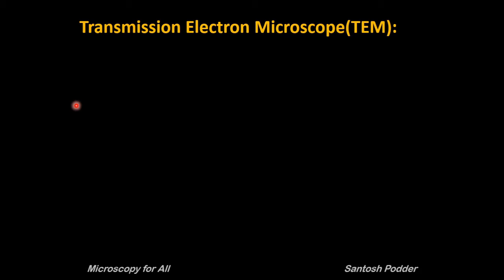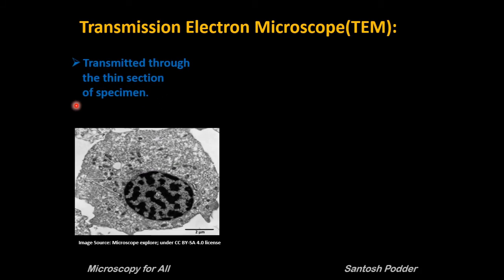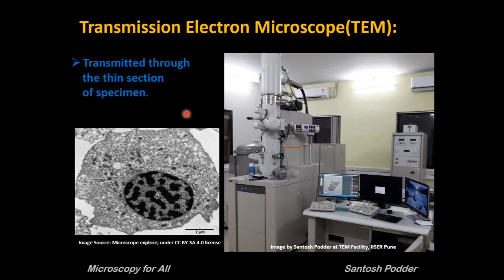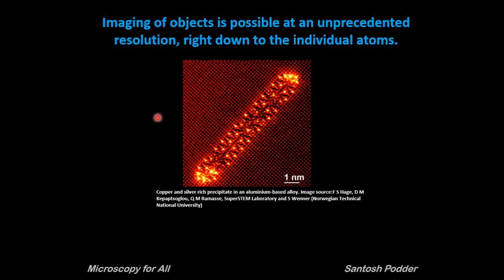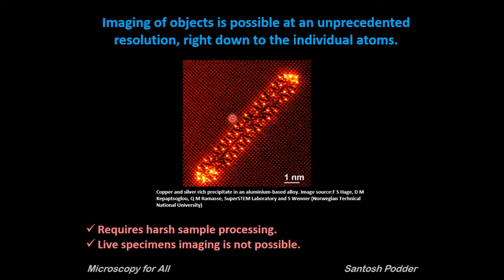In transmission electron microscopy, a beam of electrons is transmitted through a thin section of the specimen. For example, this is a hemocyte cell of Plaister where you can clearly see the nucleus, mitochondria, and vacuoles. TEM allows imaging of objects at unprecedented resolution, right down to the individual atom — in this aluminum-based alloy you can clearly see individual atoms. However, there are limitations: electron microscopes require extensive sample processing, so live specimen imaging is not possible in these systems.